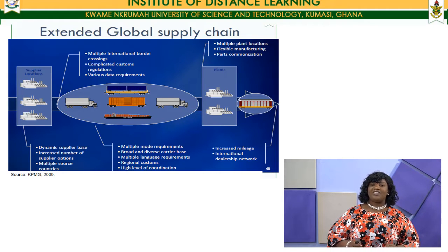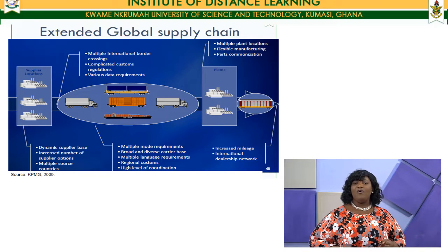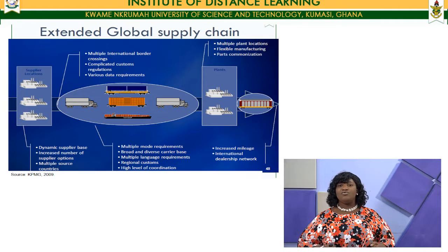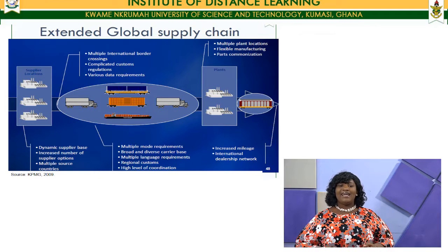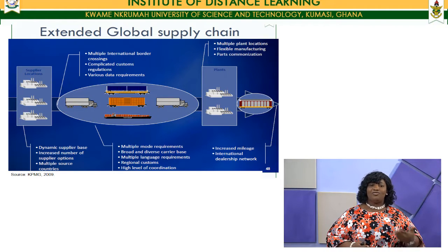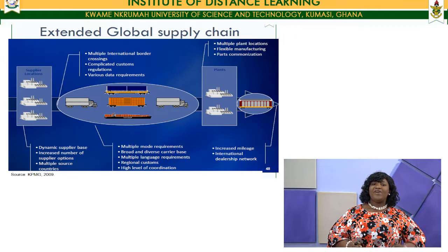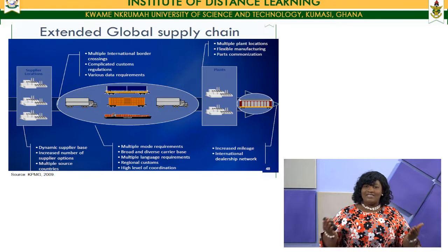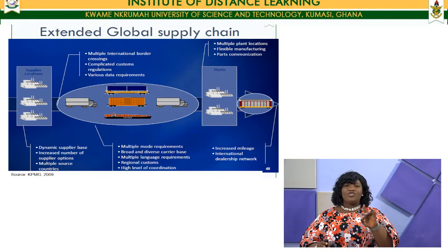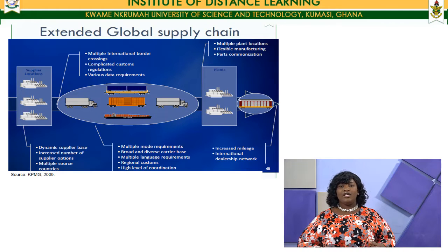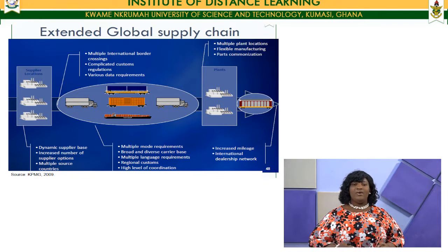When it comes to border considerations, the complexity lies in multiple international border crossings. If you are purchasing goods from about seven different countries, you face multiple international border crossing challenges, each with its own peculiar needs requiring built competence to overcome. There are also complicated customs regulations, and various data requirements — which is why you need to build a strong logistics information system to collect and analyze the right data to feed logistics managers.